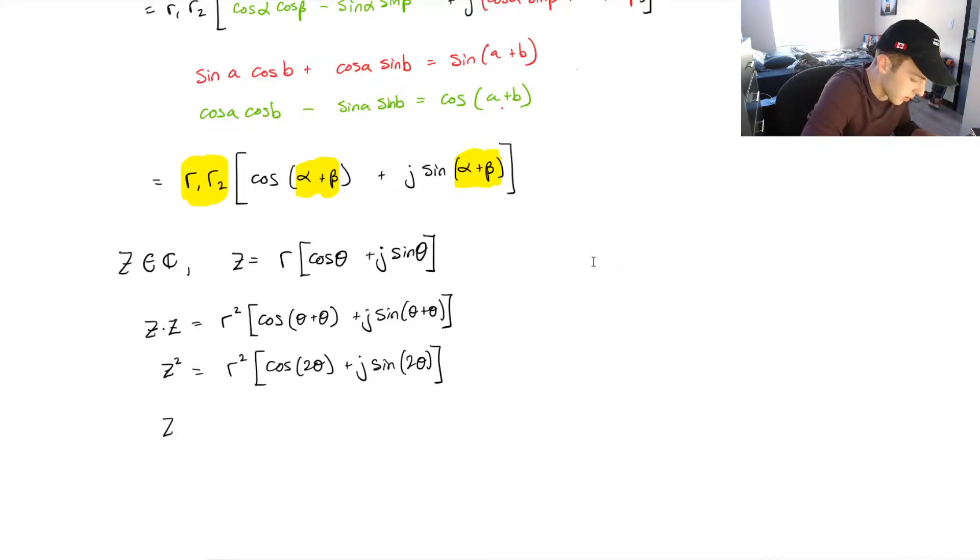So, if we did that with 3, if we did z squared, and then we multiplied that by z, then you'd find the same thing, is that we multiply together our mods, and then our arguments, we're going to add. This time, we'd be adding 2 theta plus theta, which is 3 theta.